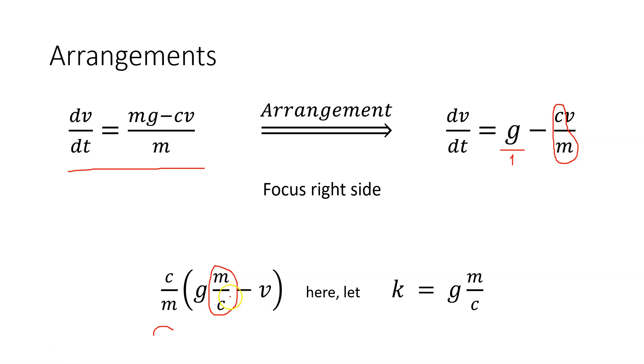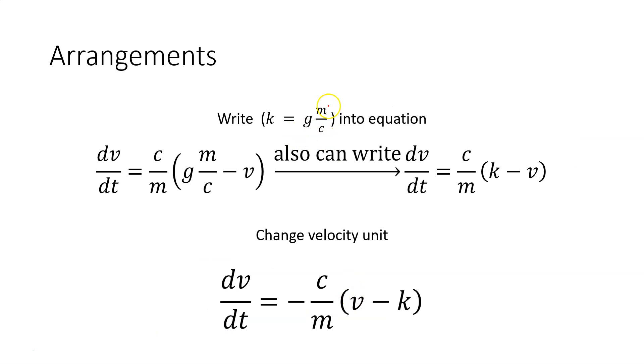Since there is no constant here, I have to write the inverse of c/m, which is m divided by c, and minus v. If you look at these three numbers g, m, and c, they are constant. Therefore, to solve easily, I can say that a new constant k can be written instead of g(m/c). Then our equation turns to dv/dt = c/m(k - v). I also want to change the sign of the velocity, so I add a negative sign at the right side: dv/dt = -c/m(v - k).